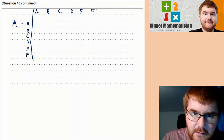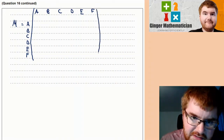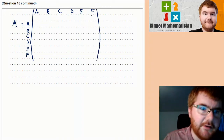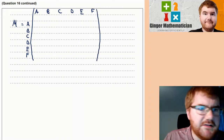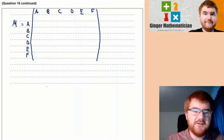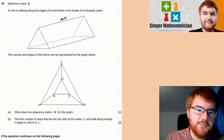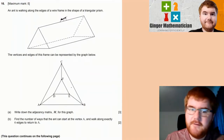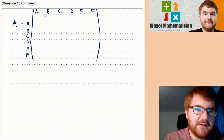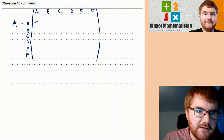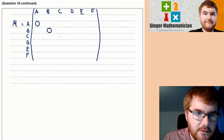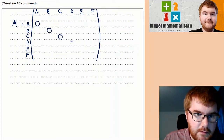To help fill in the matrix, I'll label A, B, C, D, E, F along the top and down the side. First, notice there are no loops in this graph, so all the diagonal entries are zero.